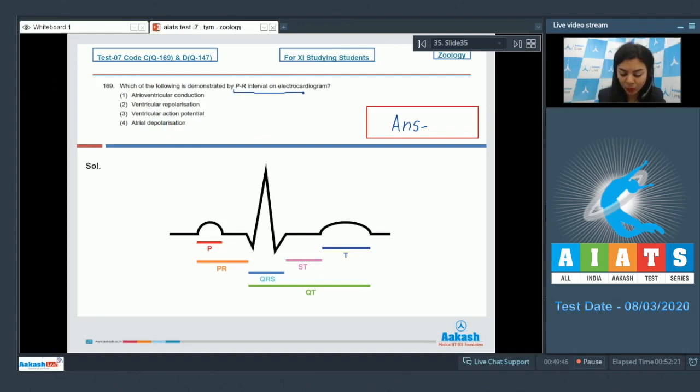The PR interval on ECG, which is this part, represents what has been asked. In a standard ECG, the P wave represents atrial depolarization, that is atrial systole.